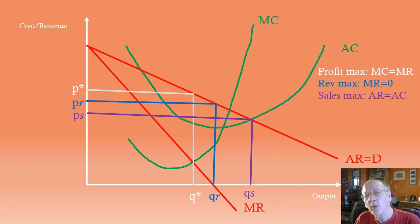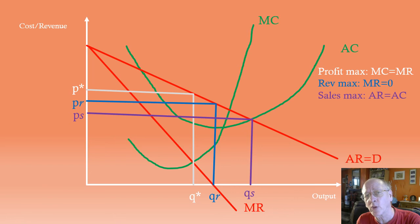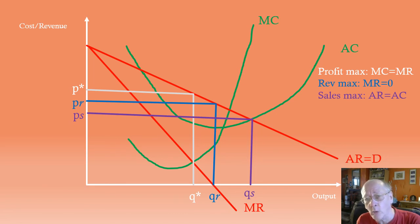So in every single case, the profit maximiser is selling at the highest price, which is one of the reasons why governments don't necessarily like profit maximisers and might want to curb the powers of large firms. So these are the three conditions you need to learn: profit max — MR equals MC; revenue max — MR equals 0; sales max — AR equals AC. Learn them.